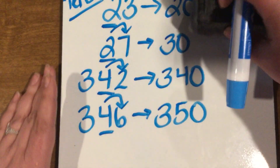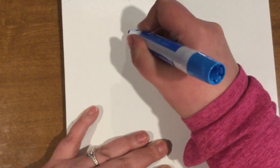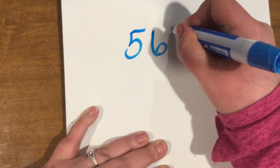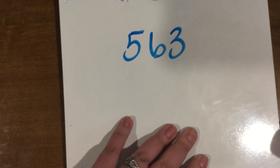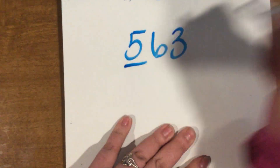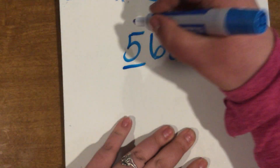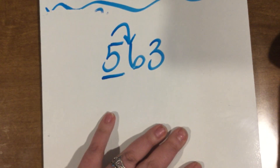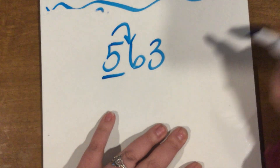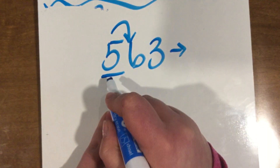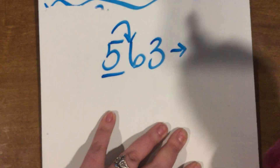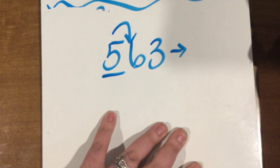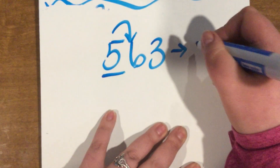Good job. What if I was rounding to my hundreds place? So let's see — five hundred and sixty-three. If we're rounding to our nearest hundreds place, we're going to underline our hundreds place and look right next door. Is it five or more, or four or less? That six is five or more, so we're going to round up our hundreds place to the next hundred. What hundred comes after five hundred? Six hundred — nice job.